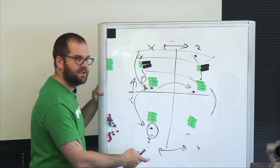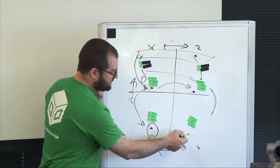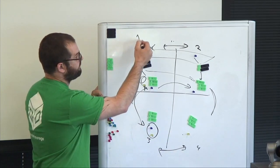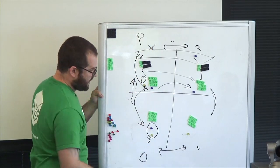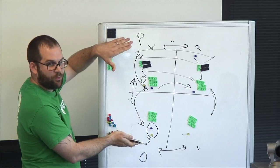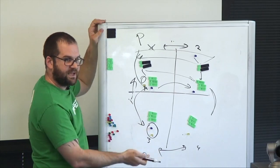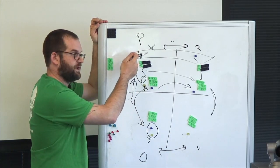As new writes come in, they go into the latency local data center. I can have a production workload up here and a dev workload down here as complete zero copy clones without affecting production performance because reads and writes are separate.